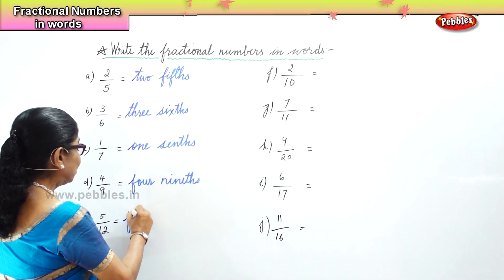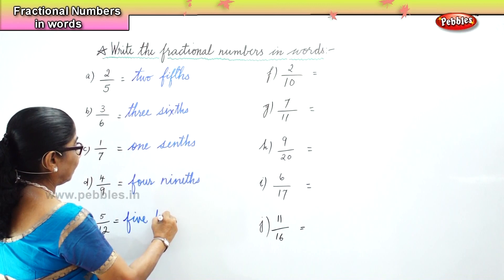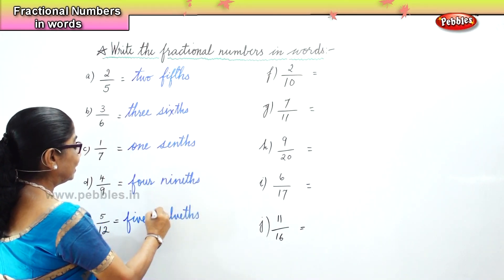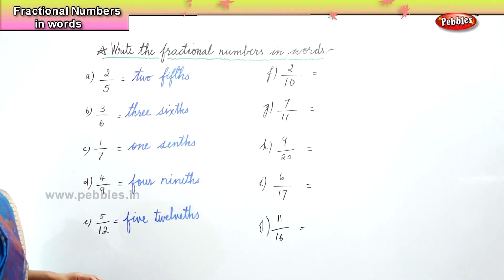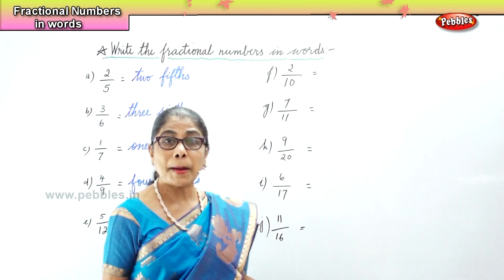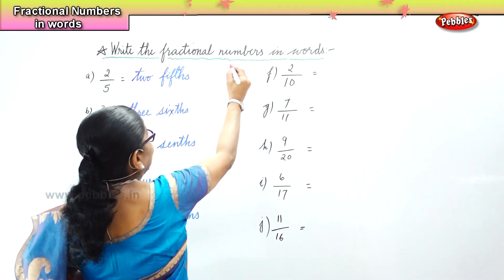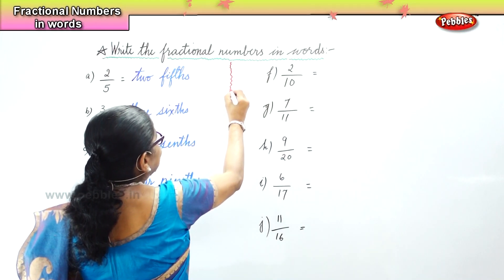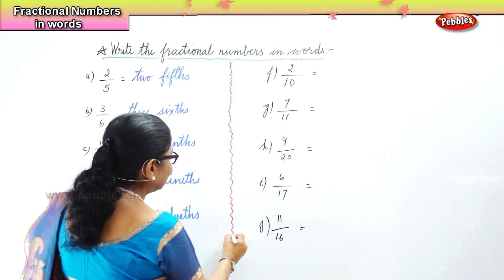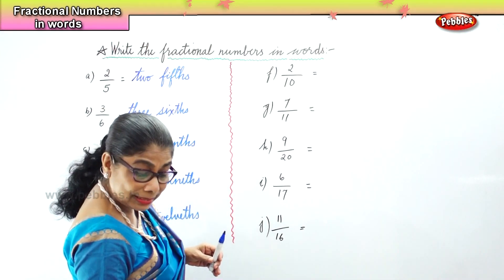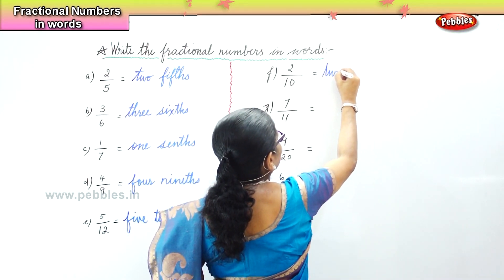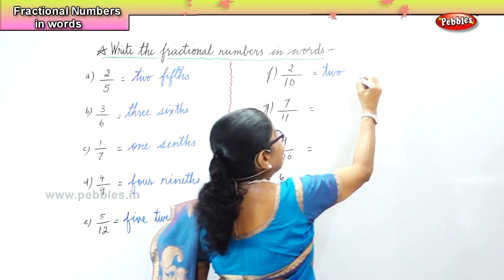Next we have two parts out of ten parts, 2 by 10. How will you write that? You will write it as two tenths. Two parts out of ten — two tenths.